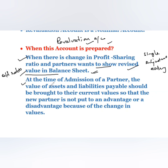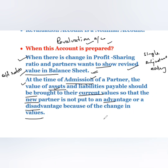The second case is the admission of a partner. At the time of admission, the value of assets and liabilities should be brought to their current values so that the new partner is not put at an advantage or disadvantage because of the change in values. The existing partners make a revision of assets and liabilities, prepare a revaluation account, and whatever gain or loss arises is distributed among themselves in the old ratio.